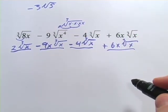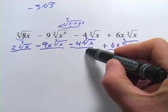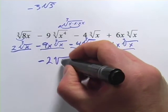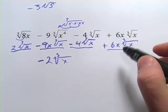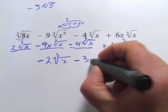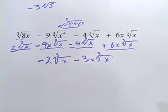Those are our two sets of like terms. So the 2 times the cube root of x minus 4 times the cube root of x becomes negative 2 times the cube root of x. And then negative 9x cube root of x plus 6x cube root of x becomes negative 3x cube root of x. And that's our answer.